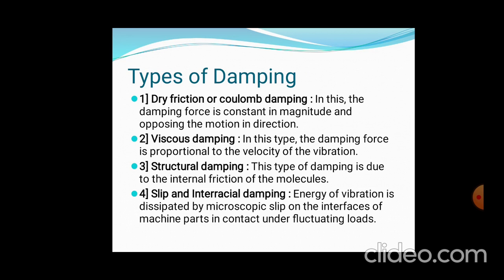Structural damping occurs because of internal friction available at the molecular level. Another type is slip or interfacial damping, where the energy of vibration is dissipated gradually with the dissipation of energy, creating resistance to the motion during that particular fluctuating load.